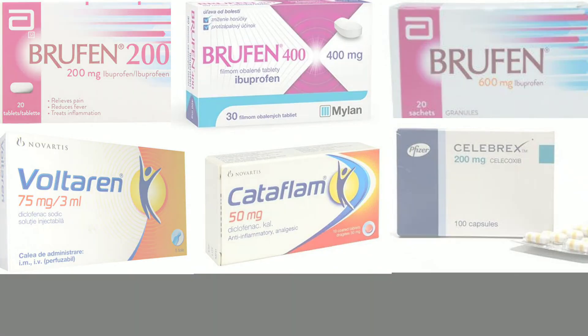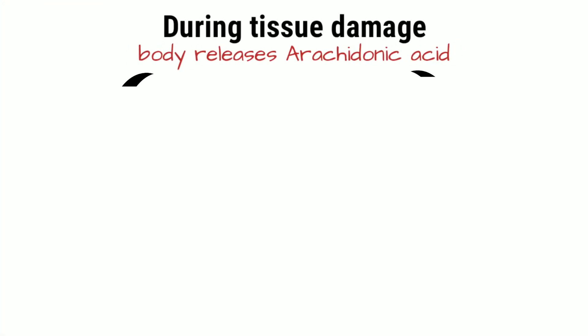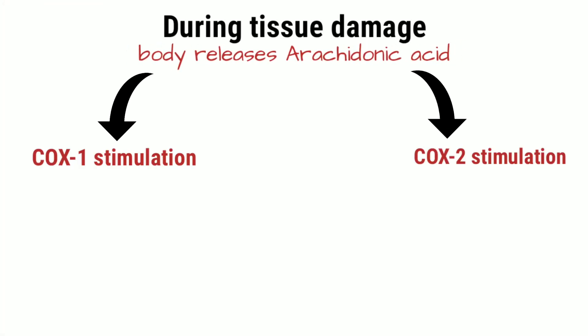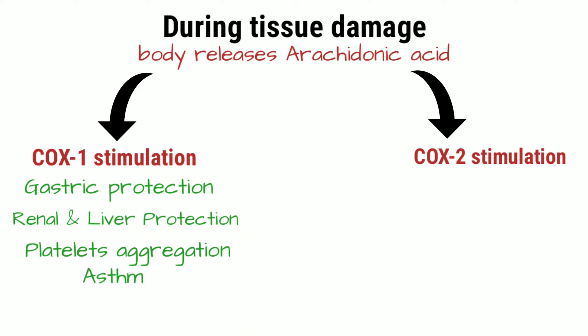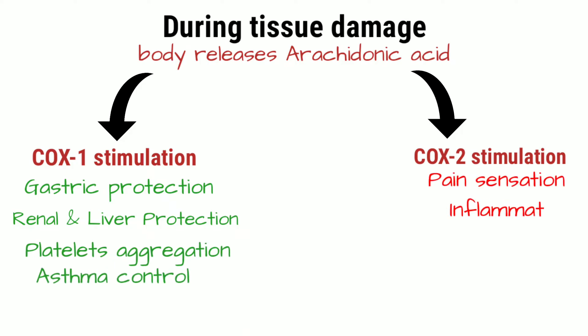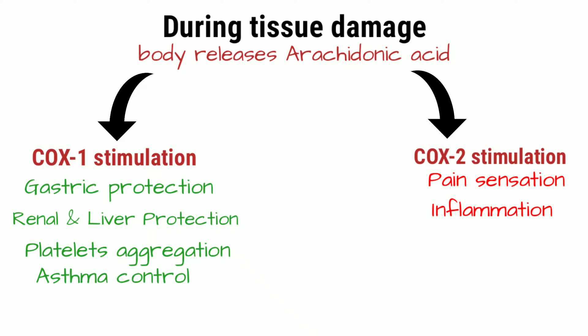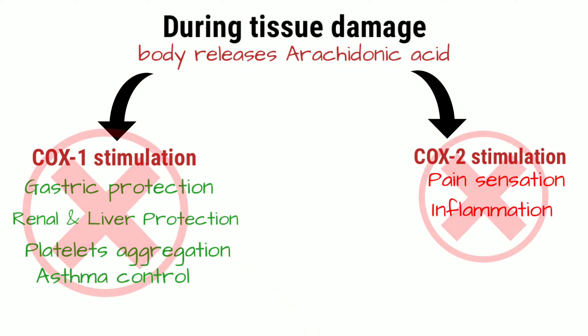If we look deeply at the mechanism of their action, these drugs prevent the production of COX-1 and COX-2 in the body. COX-1 is responsible for gastric protection, renal function, and platelet aggregation, while COX-2 is responsible for pain sensation and the inflammation process. By inhibiting both, pain and inflammation will not be present.